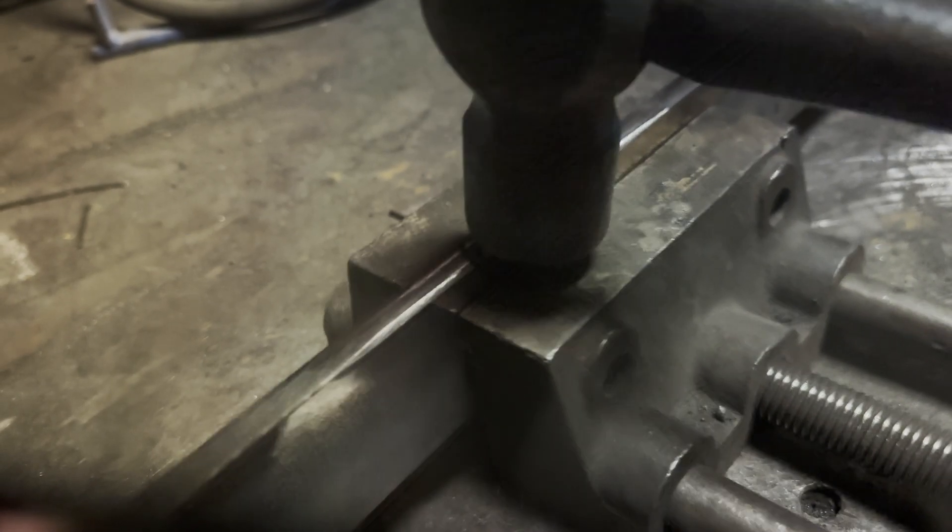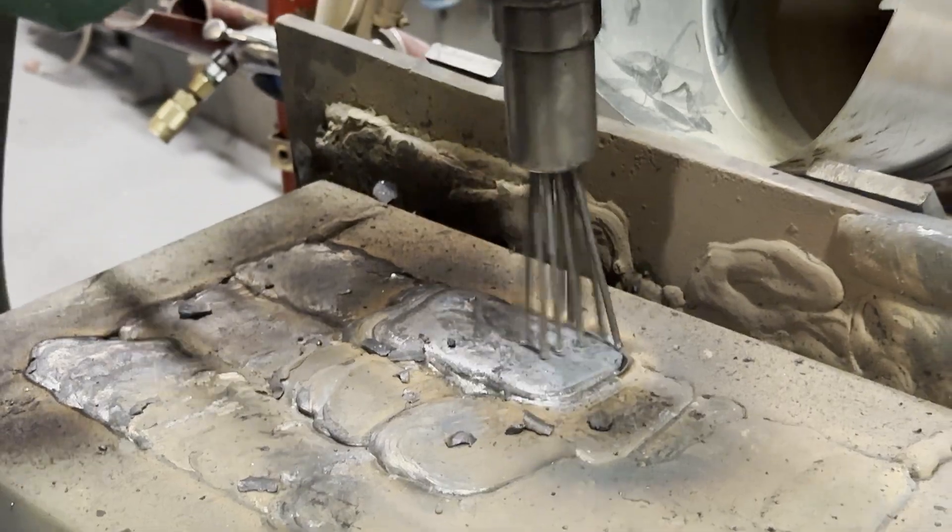Peening is most often accomplished by hitting the weld to deform it using a ball peen hammer, a needle scaler, or an air hammer.